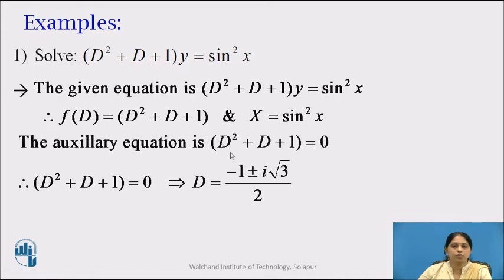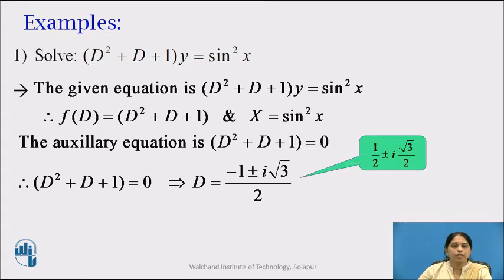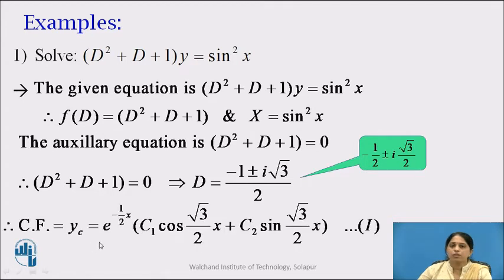The auxiliary equation is D² + D + 1 = 0. Solving, D = [−1 ± i√3] / 2. The roots are complex and distinct and can be written as −1/2 ± i(√3/2). Therefore yc = e^(−x/2) [c1 cos(√3/2 · x) + c2 sin(√3/2 · x)]. We will call this equation number 1.